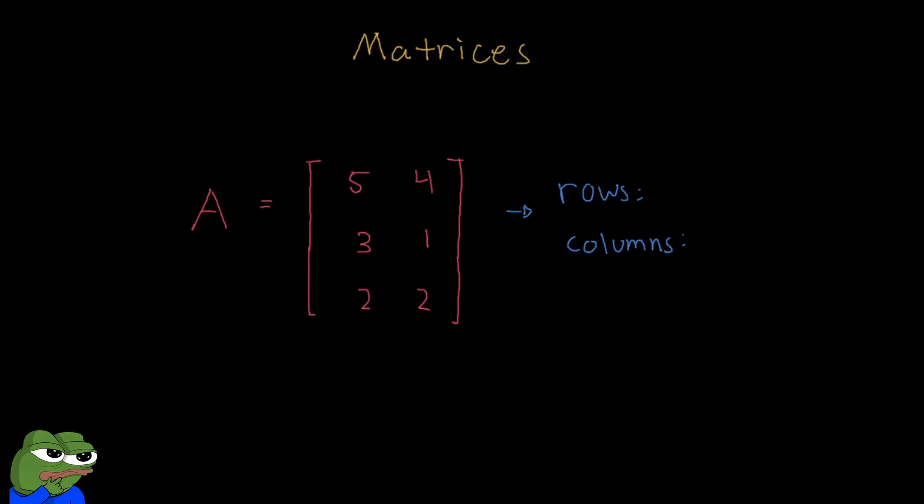Let's talk about matrices and what they are. Matrices are simply an array of numbers that are arranged in rows, which are horizontal, and columns, which are vertical.